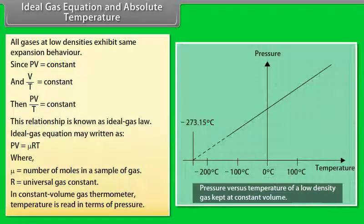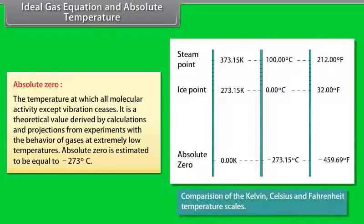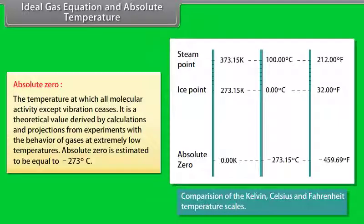In a constant volume gas thermometer, temperature is read in terms of pressure. The temperature at which all molecular activity except vibration ceases is known as absolute zero. It is a theoretical value derived by calculations and projections from experiments with the behavior of gases at extremely low temperatures. Absolute zero is estimated to be equal to −273° Celsius.